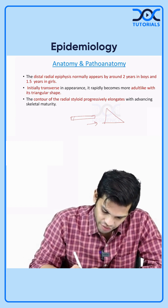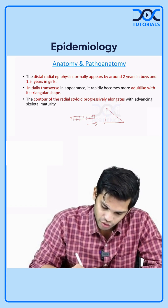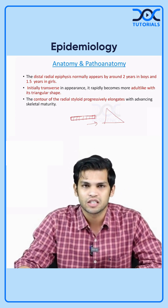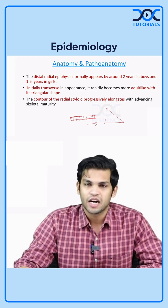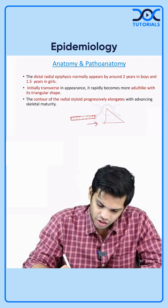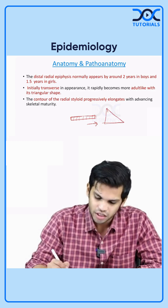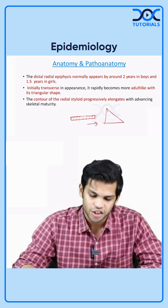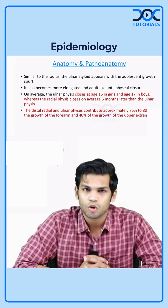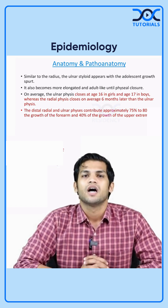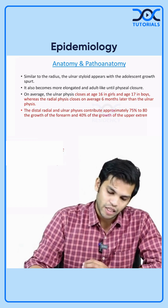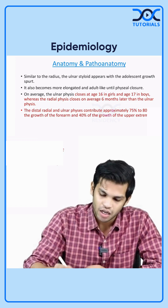As discussed, the initial epiphysis appearance would be transverse in shape. As the age increases and the child attains adolescent age group, the epiphysis changes its shape, gradually elongates, and takes the adult shape. Similar to the radius, the ulnar styloid also appears with the adolescent growth spurt. It becomes more elongated and adult-like until physial closure, similar to the radial epiphysis.